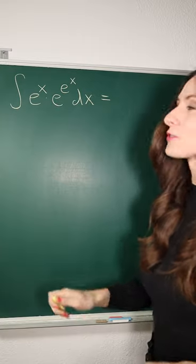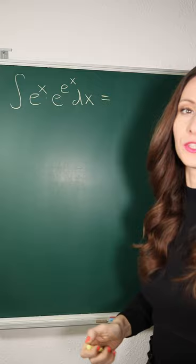Let's integrate e to the x times e to the e to the x. We are going to use u-substitution.